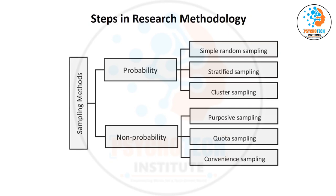So we are trying to improve the quality of sample selection, and there are different sampling methods. For now, remember there are two types: probability sampling and non-probability sampling. Probability sampling means you have a proper systematic method to choose the sample, while non-probability sampling is based on convenience.